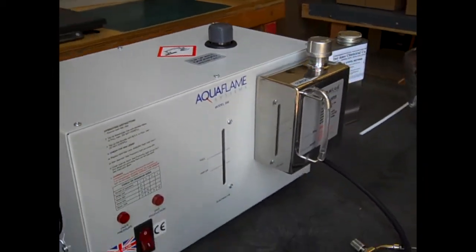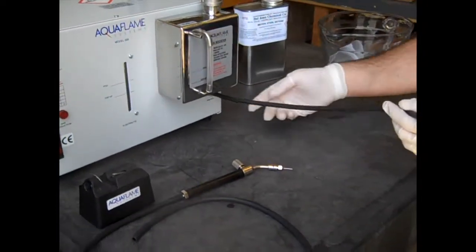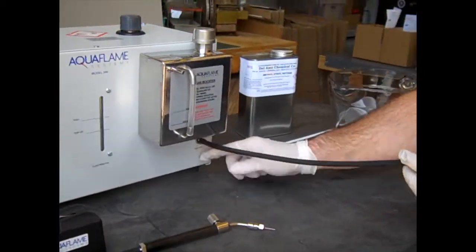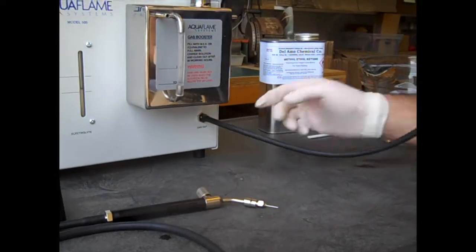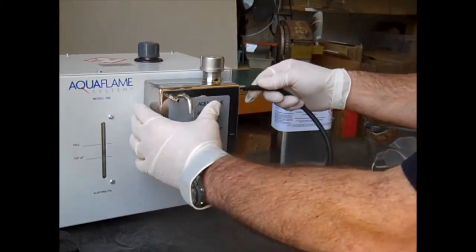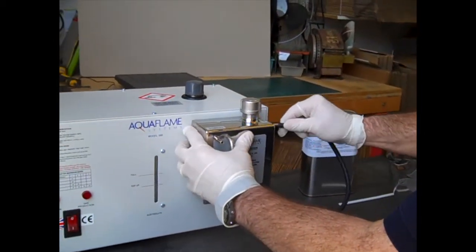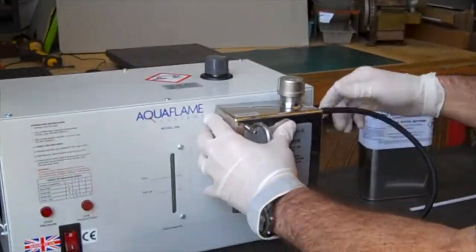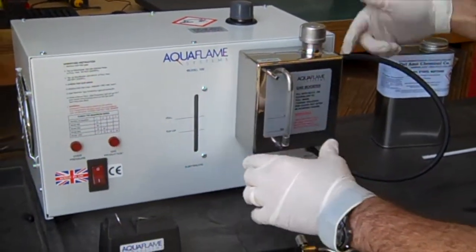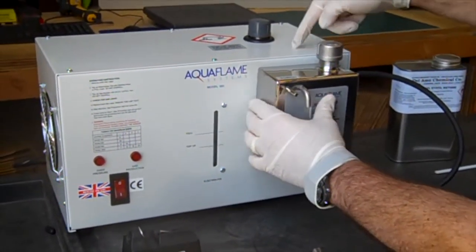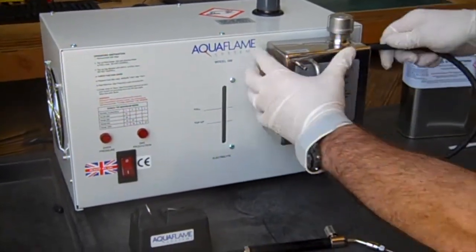And we've got our lines ready to go here. We've got a gas outline that we've already attached here and we're going to attach that here to the gas in. So once the gas is produced in the machine, it's going to come through here and out through this line to our torch.